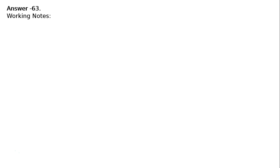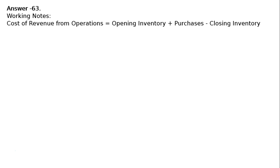To solve this, we first need to find the closing inventory, then we can proceed. In the working notes, cost of revenue from operations equals opening inventory plus purchases minus closing inventory.